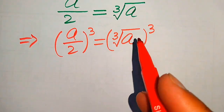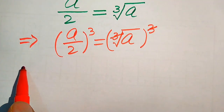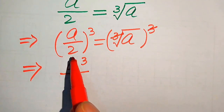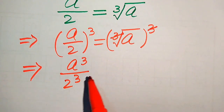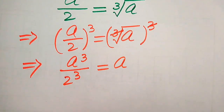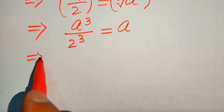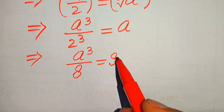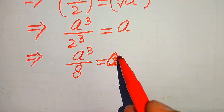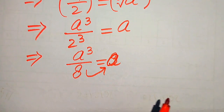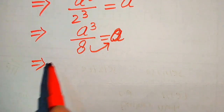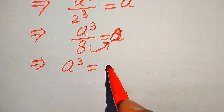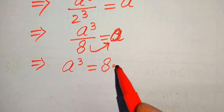The cube and cube root cancel out, and we know that a cube of A over 2 gives us A cubed on the left. 2 cubed equals 8, so we get 8 equals A. Moving 8 to the right hand side and multiplying, it becomes A cubed equals 8 times A.